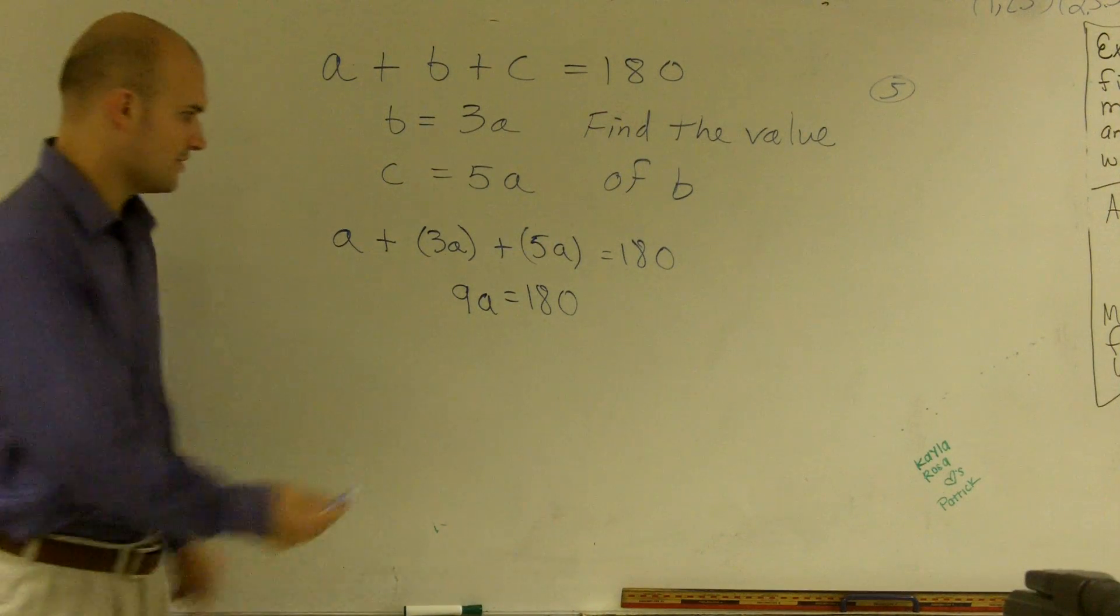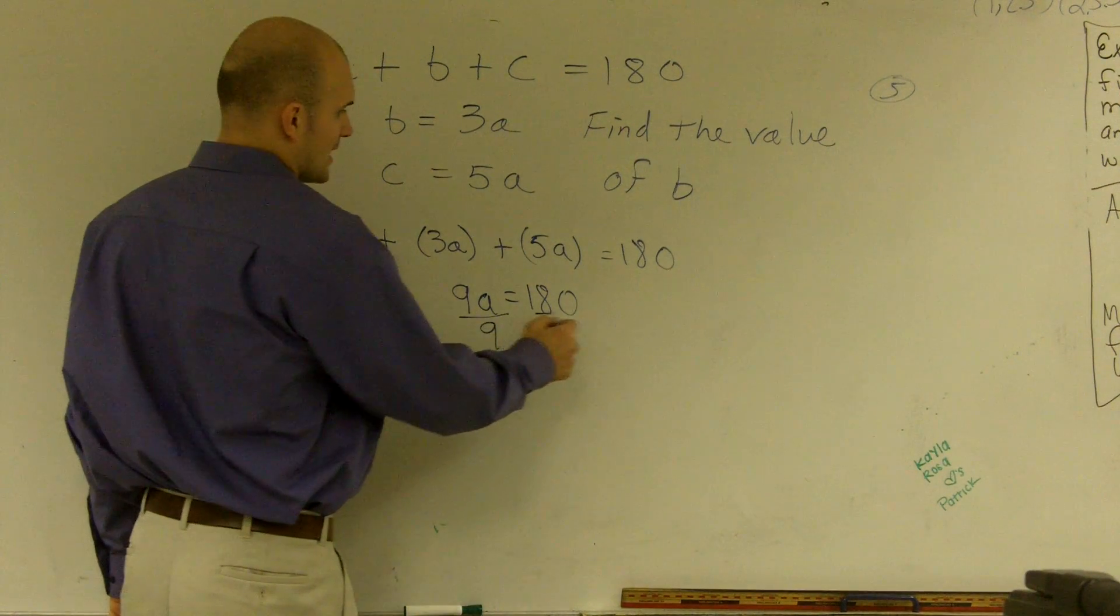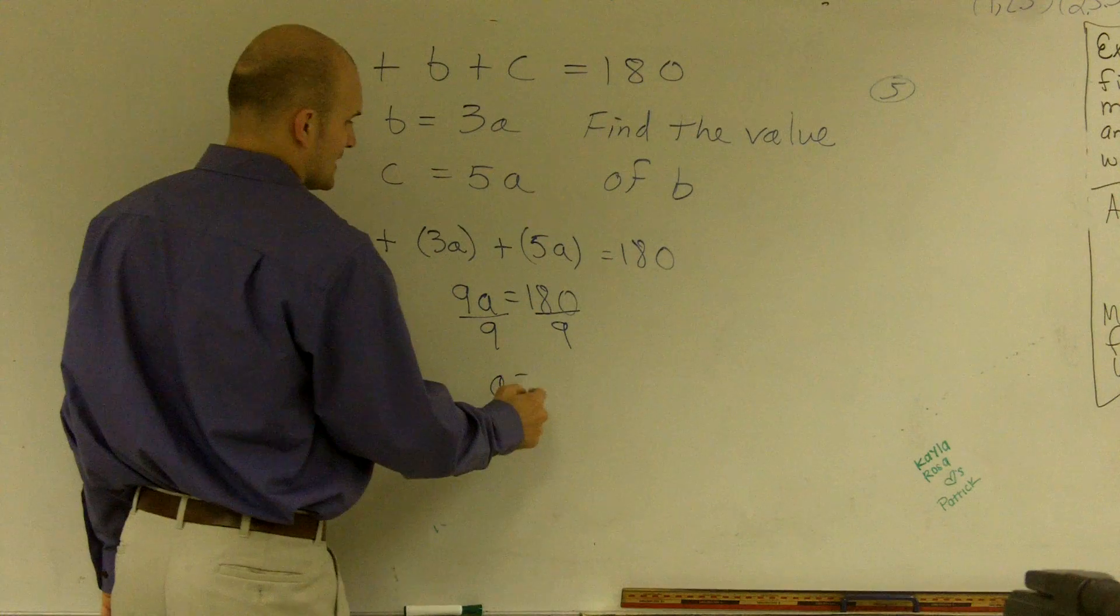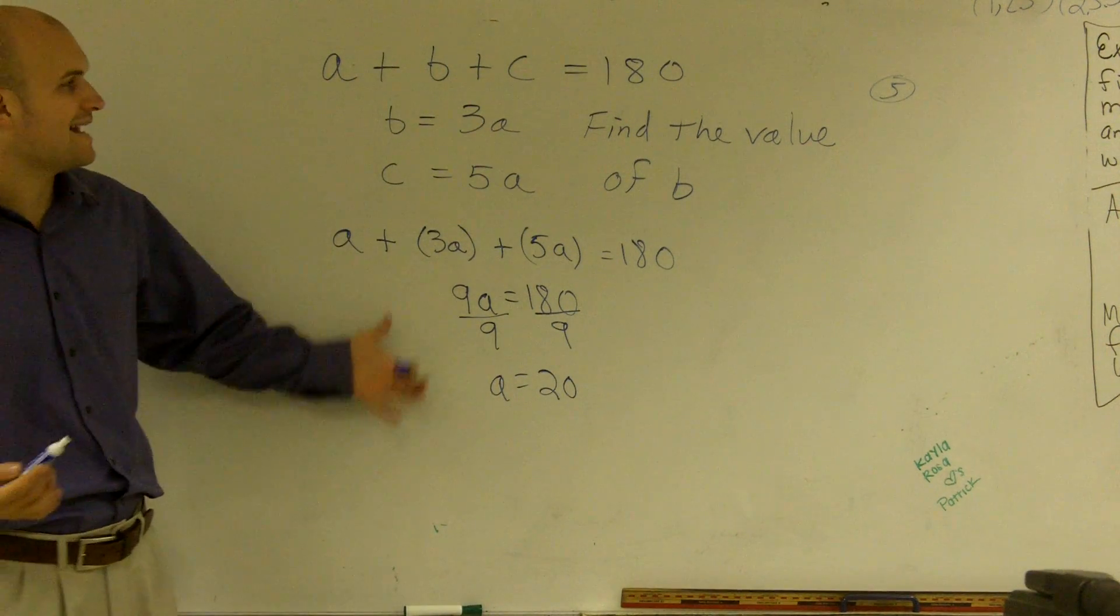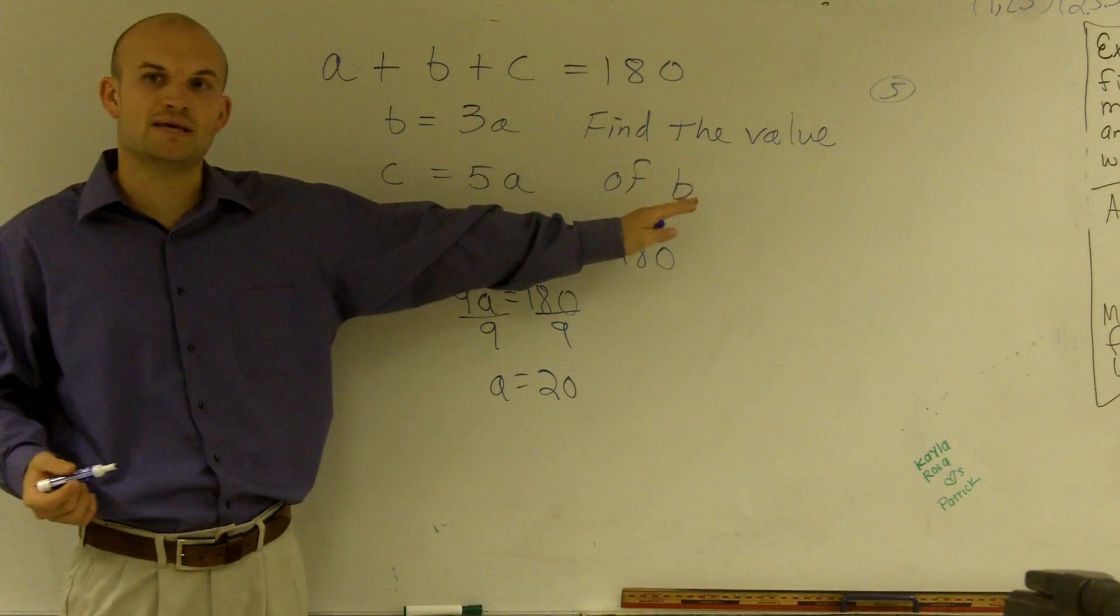So now, to solve for a, I just divide by 9. And I get a is going to equal 20. However, the question does not ask what is the value of a. The question asks, what is the value of b?